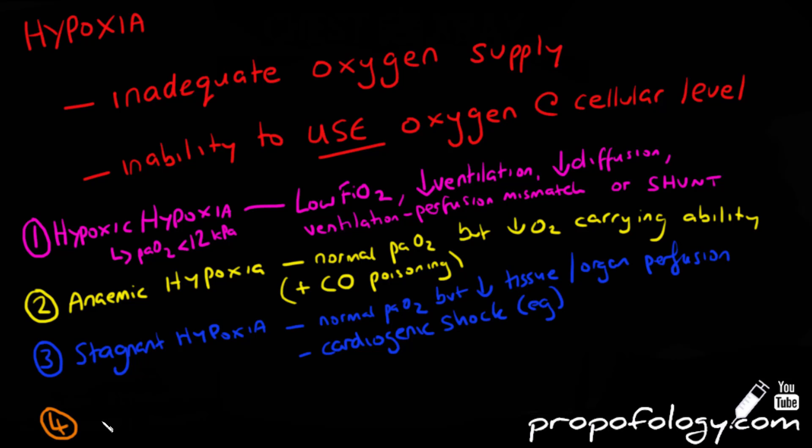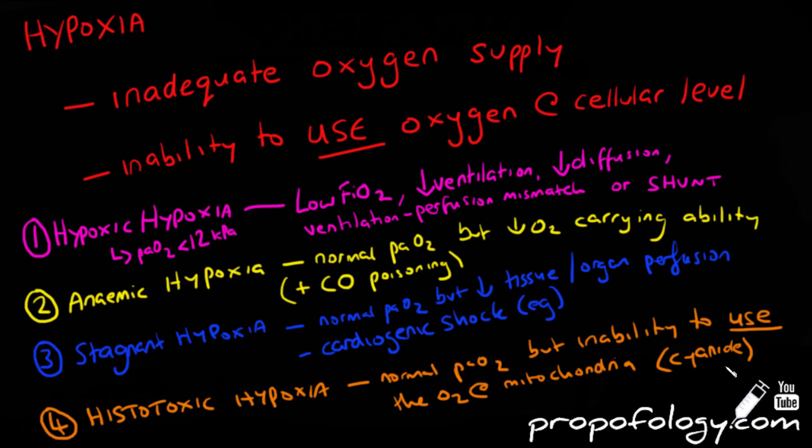Finally, and probably least commonly is histotoxic hypoxia, where you'll see a normal PaO2, normal oxygen carrying capacity and tissue perfusion. But there's an inability of the tissues to utilize oxygen at the cellular level, which is the mitochondrial level. So mitochondria can't actually use the oxygen you're supplying it, and that can be seen in cyanide poisoning, which is a direct metabolic toxin.